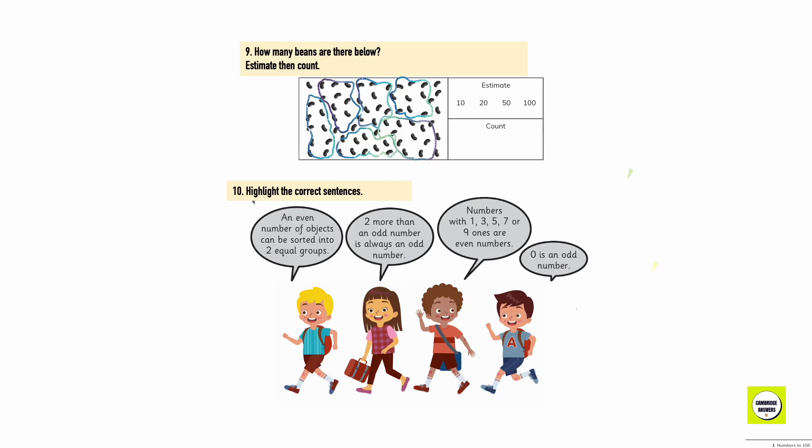How many beans are there below? Estimate and then count. I estimate them to be 50 and when I count them they're 67. Tick the correct sentences. An even number of objects can be sorted into two equal groups. 2 more than an odd number is always an odd number.